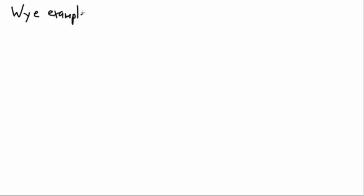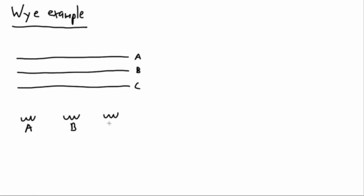And now let's take a look at a Y example. We showed a primary side delta connection for a transformer in the previous example. Now let's look at what the Y example is. So here are our three incoming lines providing power to our inductors. And we're going to have, just like the delta example, we are going to have three single phase inductors that we're going to have on our transformer.